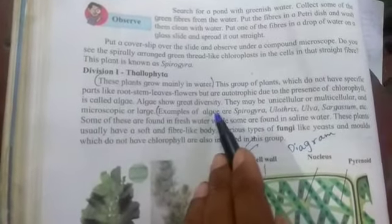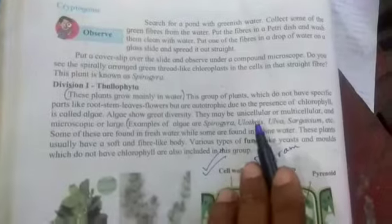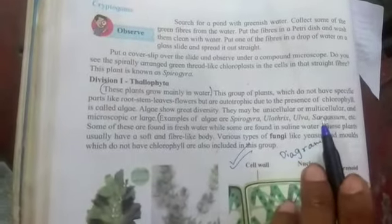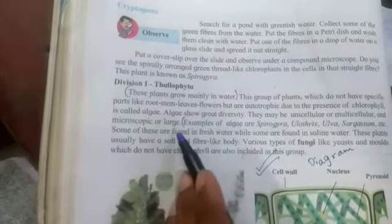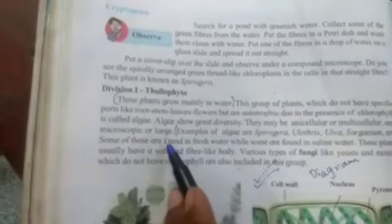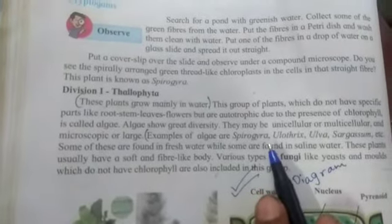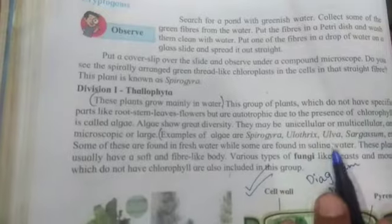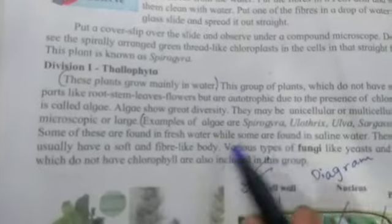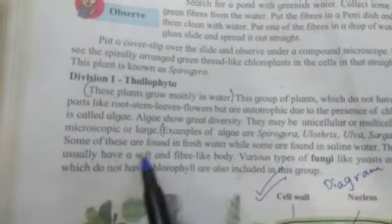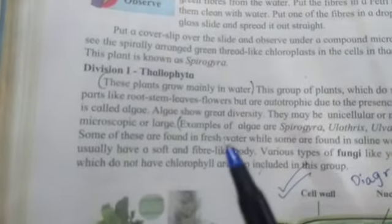Algae have great diversity — there is a variety of diversity in this group. All types of algae come under Thallophyta. Some of these are found in fresh water while some are found in saline water.